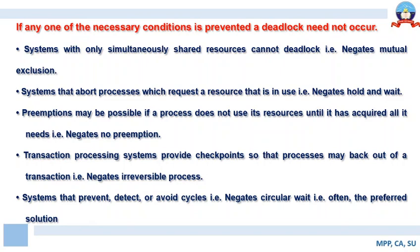To summarize: you need to negate mutual exclusion, negate hold and wait, negate no preemption, negate irreversible processes, and negate circular wait. If you negate all five of these important aspects, deadlock can be prevented.